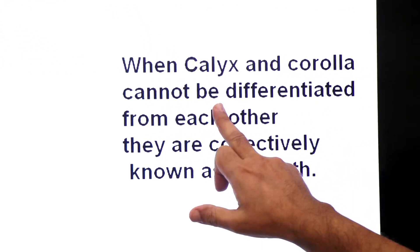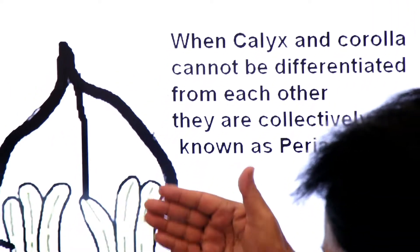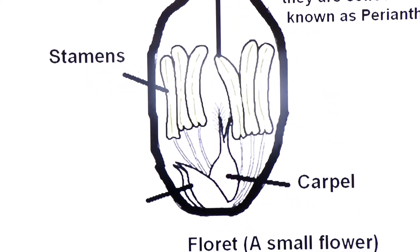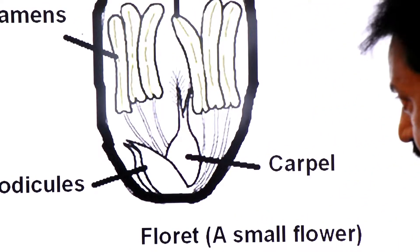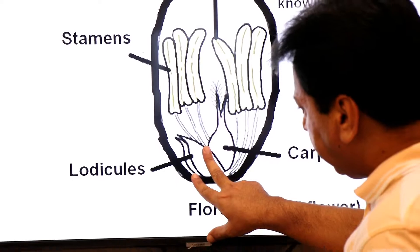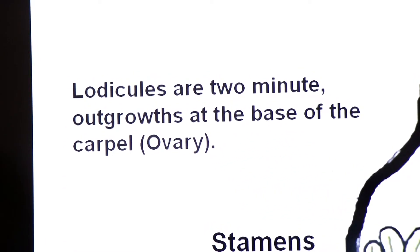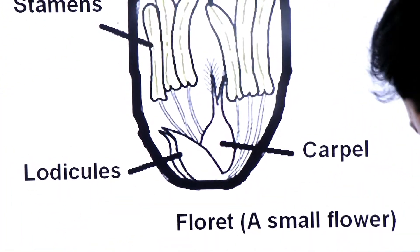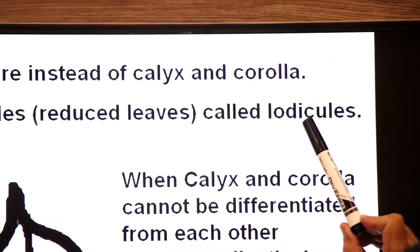When calyx and corolla cannot be differentiated from each other, they are collectively known as perianth. In the floret you can see stamens, carpel or ovary, and two small scales — reduced leaves known as lodicules. Lodicules are two minute outgrowths at the base of the carpel or ovary. The perianth is reduced to two scales called lodicules.